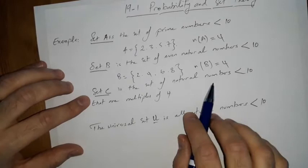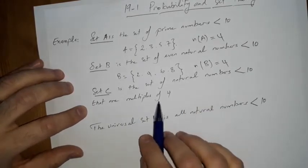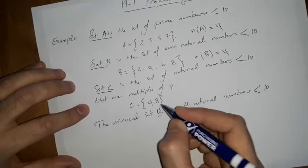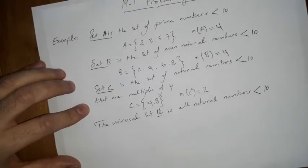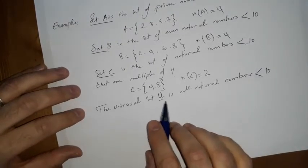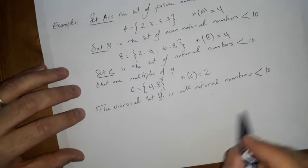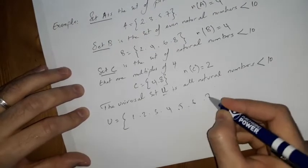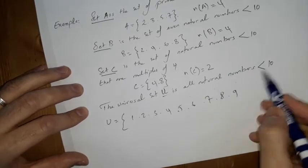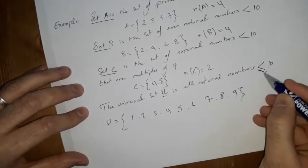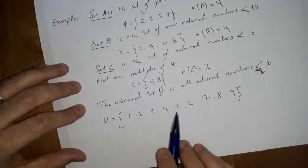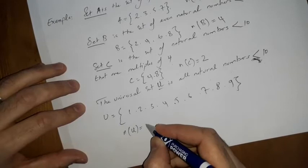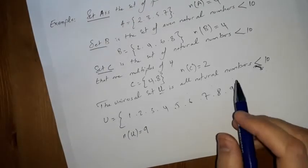N(B) = 4 as well. Set C is the set of natural numbers less than 10 that are multiples of 4, so C = {4, 8}, and n(C) = 2. The universal set U is all natural numbers less than 10: U = {1, 2, 3, 4, 5, 6, 7, 8, 9}, so n(U) = 9.